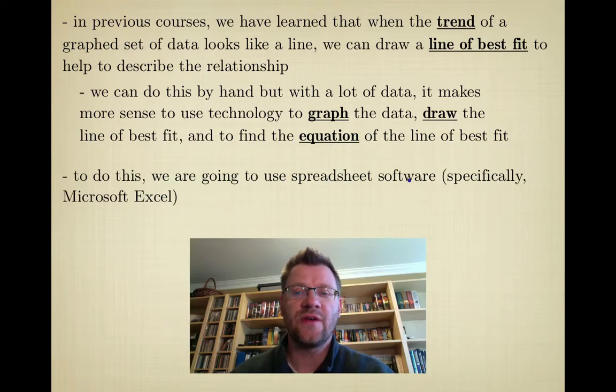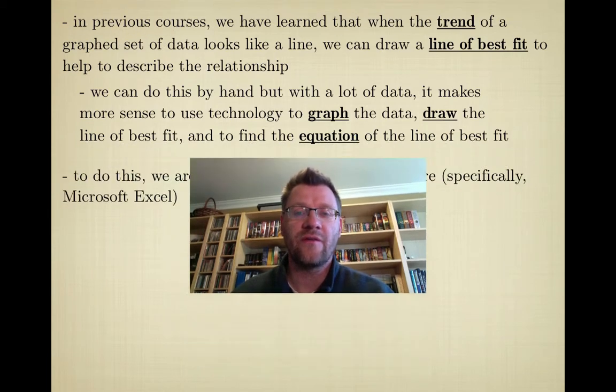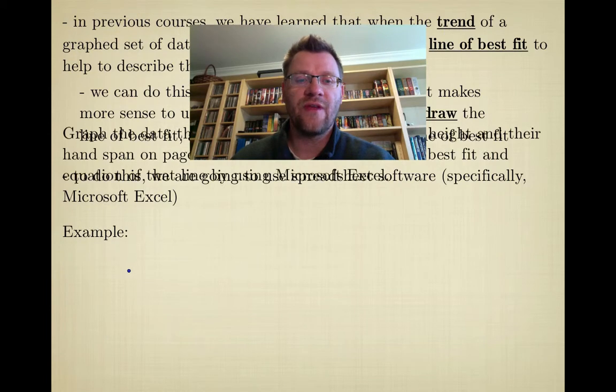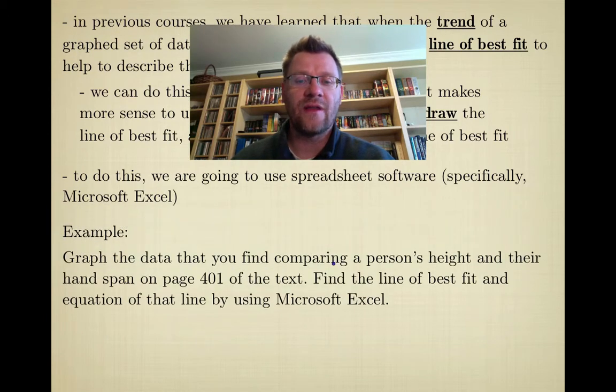To do this we're going to use spreadsheet software, specifically Microsoft Excel. We're going to start with an example: graph the data you find comparing a person's height and their hand span on page 401 of the text, find the line of best fit and equation of that line by using Microsoft Excel.